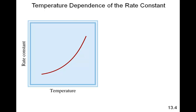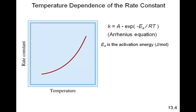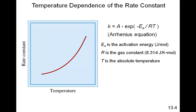Temperature dependence of the rate constant: it turns out that the reason temperature affects the rate of a reaction is because it affects the rate constant. Arrhenius developed an equation stating that the rate constant K equals a constant A times e raised to the minus Ea over RT, where Ea is the activation energy, R is the gas constant 8.314 joules per mole Kelvin, T is the temperature in Kelvin, and A is the frequency factor related to the frequency of collisions.